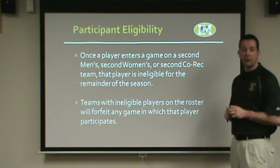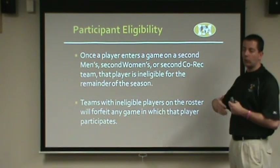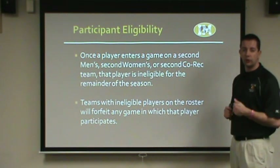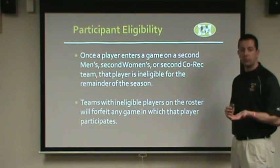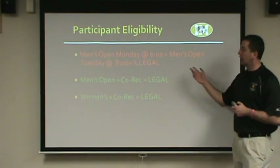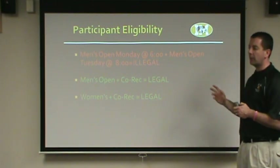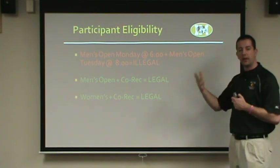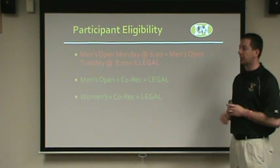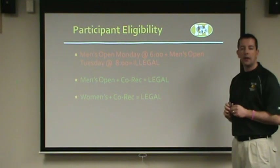Any team that plays with ineligible players will forfeit that game. So if we find that one of your players has played on multiple men's teams or multiple co-rec teams and then plays for you, your team is going to forfeit those games. Make sure your players are only playing for your men's or women's team and only for your co-rec team. A couple of examples: it would be illegal to play on a men's open team Mondays at 6 and another league Tuesdays at 8. Legal options include playing on a men's open team and a co-rec team, or a women's open team and a co-rec team.